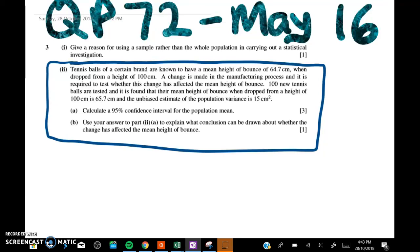We do it one way and not another. Reading through the question, we've got tennis balls of a certain brand that are known to have a mean height of bounce of 64.7 when they're dropped from a height of 100 centimeters. We're told that there's a change made in the manufacturing process and we have to test whether this change has affected the mean height of bounce. This could be a hypothesis testing question or a confidence interval question.